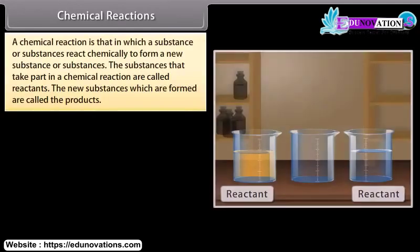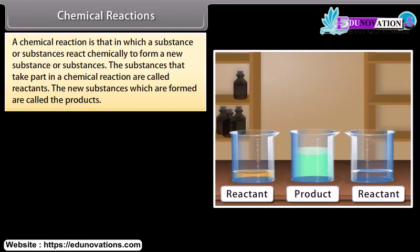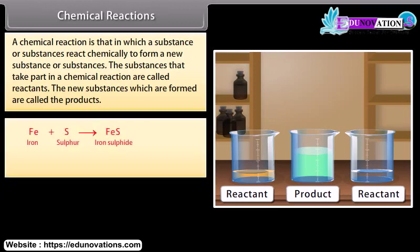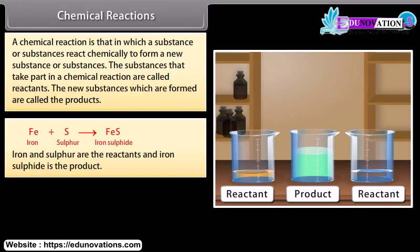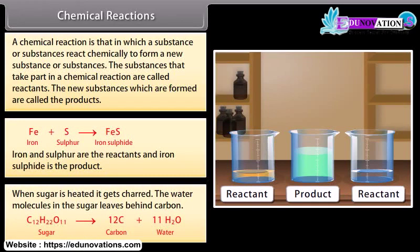A chemical reaction is that in which a substance or substances react chemically to form a new substance or substances. The substances that take part in a chemical reaction are called reactants. The new substances which are formed are called the products. Iron plus sulfur gives iron sulfide. Iron and sulfur are the reactants and iron sulfide is the product. When sugar is heated it gets charred. The water molecules in the sugar leave behind carbon.